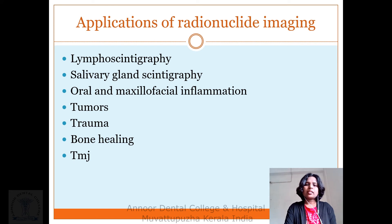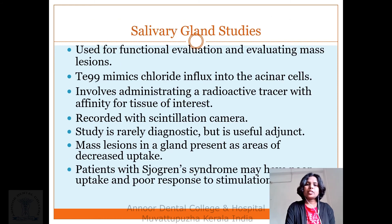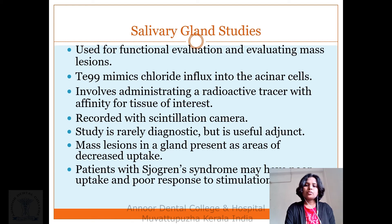Applications of radionuclide imaging include lymphoscintigraphy, salivary scintigraphy, oral and maxillofacial inflammation, tumors, trauma, bone, and salivary gland studies. For salivary gland evaluation, it is used for functional evaluation and evaluating mass lesions. Technetium-99m pertechnetate is taken up into acinar cells. It involves administration of radioactive tracers with affinity for tissue of interest, recorded with a scintillation camera. Mass lesions in a gland present as areas of decreased uptake. It can be used in patients with Sjögren's syndrome, which may show poor response to stimulation.